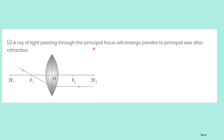Second rule: a ray of light passing through the principal focus will emerge parallel to the principal axis after refraction. The incident ray passes through the focus; after hitting the refracting surface it gets refracted, then travels parallel to the principal axis. Always it will be parallel to the principal axis — that is the second rule.